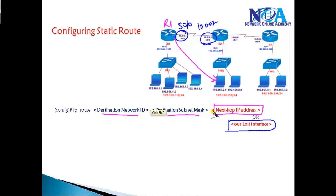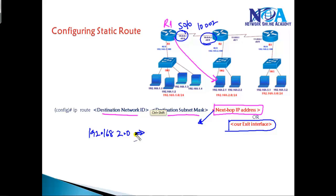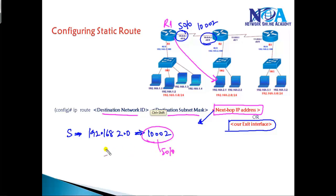The major difference between these two options is: if you write the next hop, the router checks the routing table twice. For example, if Router 1 wants to reach 192.168.2.0, it will see that route and note it must go via 10.0.0.2, then check the routing table again to find that next hop is reachable via S0/0, and then forward the packet out of S0/0.